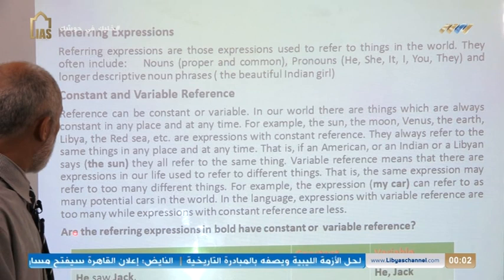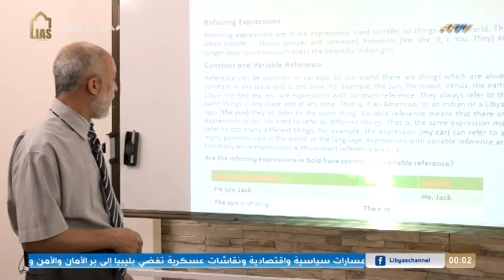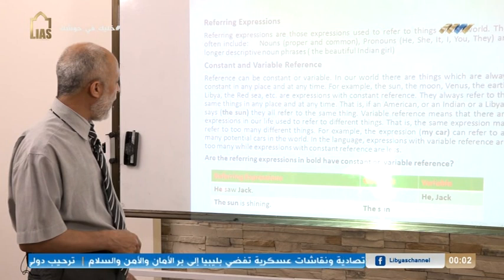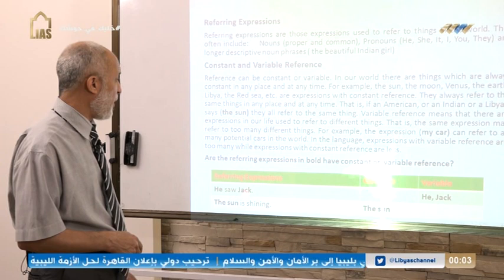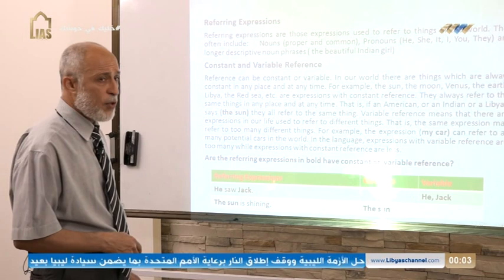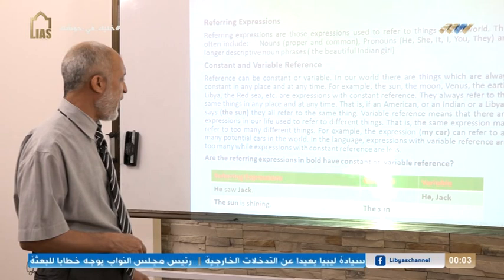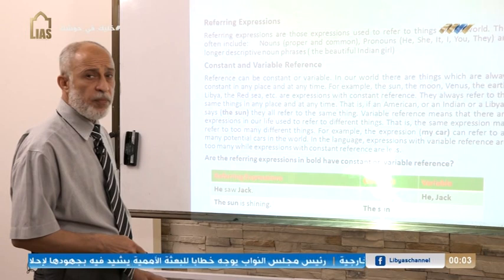Now, are the following expressions in bold having constant or variable reference? We have the pronoun 'he' and the proper noun 'Jack.' So 'he' and 'Jack' are variable, because 'he' may indicate any person, and 'Jack' may refer to any person with that name, since many people share this name. In the sentence 'The sun is shining,' the sun is constant because it refers to a constant thing in the world.